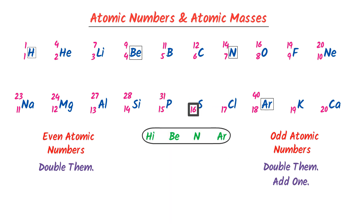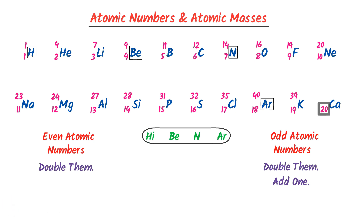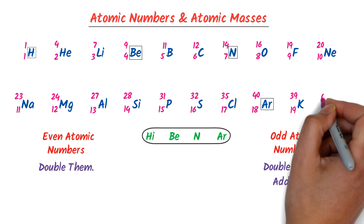The atomic number of Sulphur is 16; double it to get 32, giving an atomic mass of 32. The atomic number of Potassium is 19; double it to get 38, plus 1 equals 39. The atomic number of Calcium is 20; double it, which gives 40.